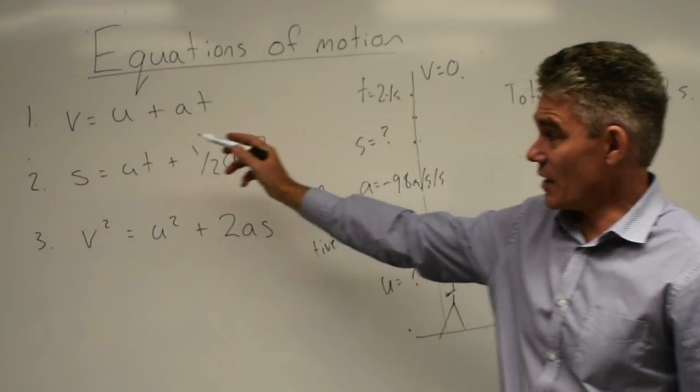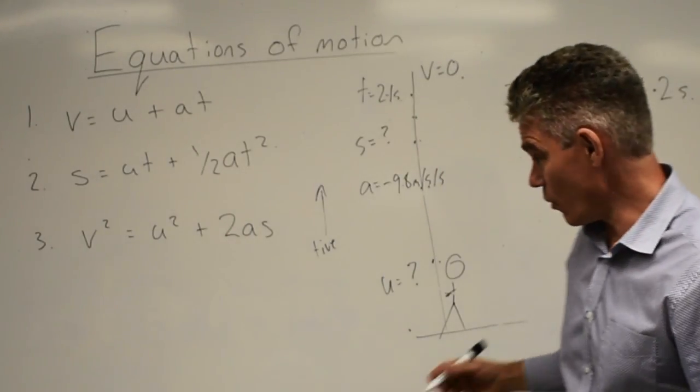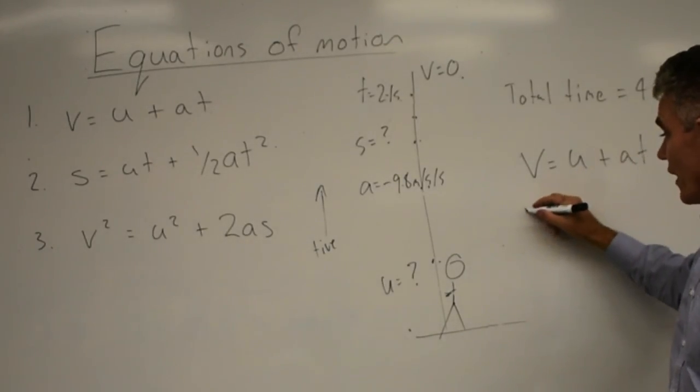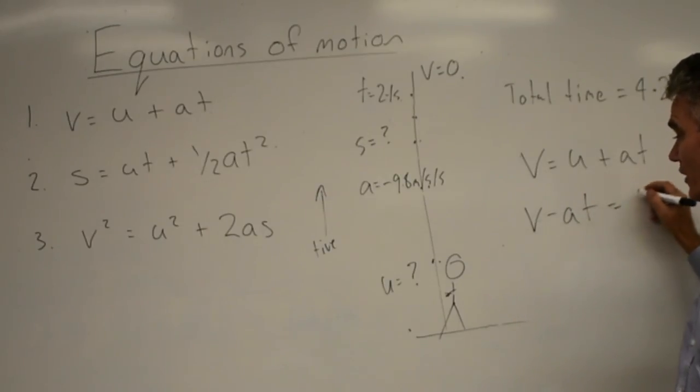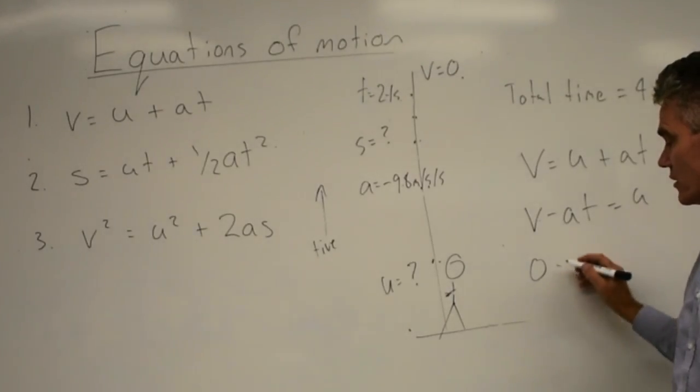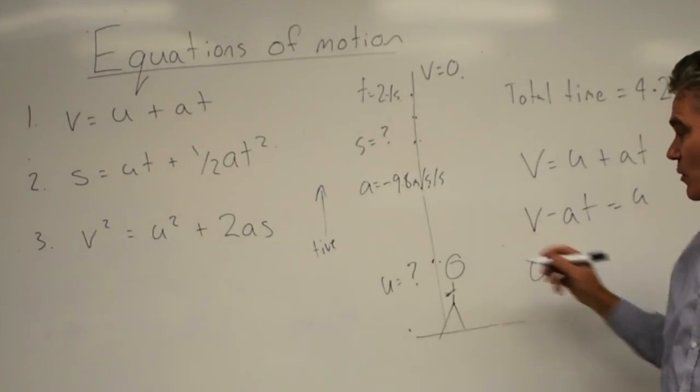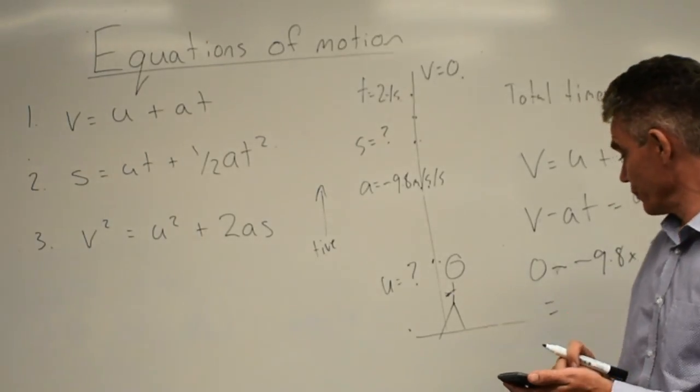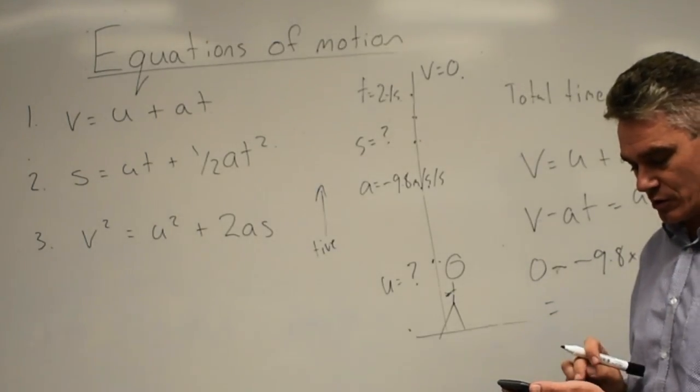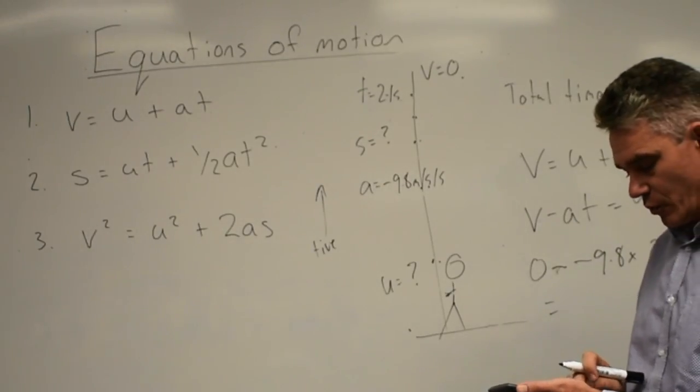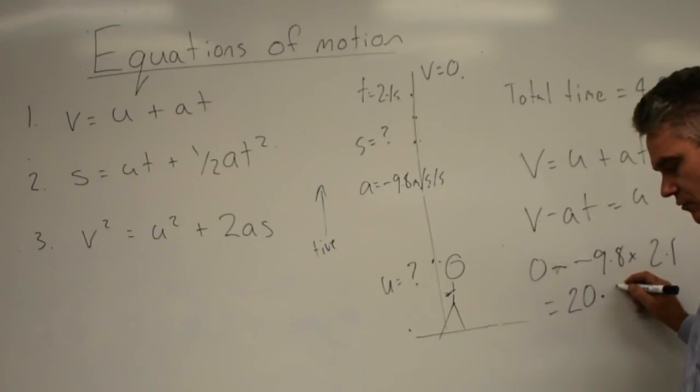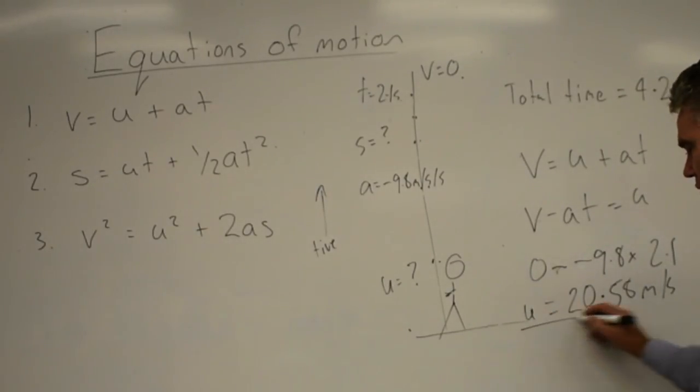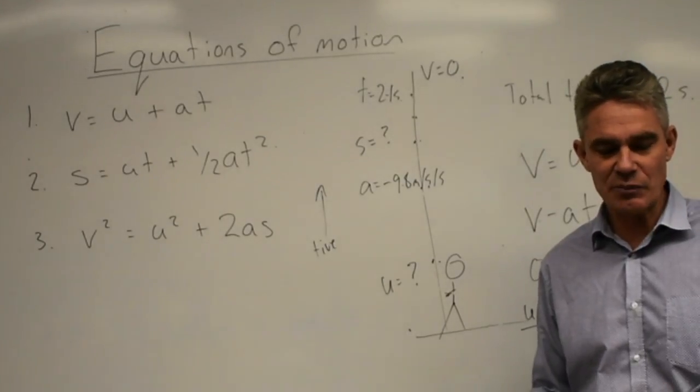And so all we need to do is sub into, let's rearrange equation number one. And so we go V equals U plus AT. We're going to solve for U. And so V, I'm going to minus AT from both sides. That'll give me U. And so the final velocity is zero minus, now the acceleration is minus 9.8. The time is 2.1. Your calculator should be the very last thing that you do. A minus times a minus is positive. So 9.8 times 2.1 gives me 20.58 metres per second. Notice it's a positive number, so that means it's up. So he's thrown the ball upwards at 20.58 or 20.6 metres per second.